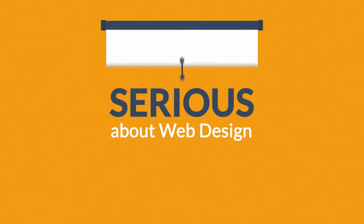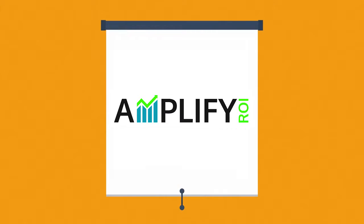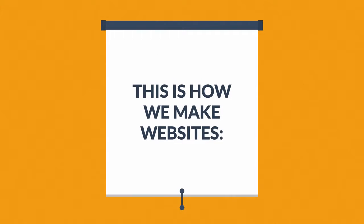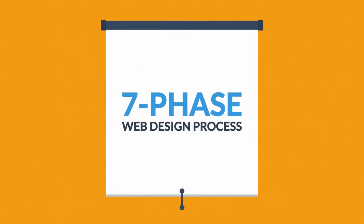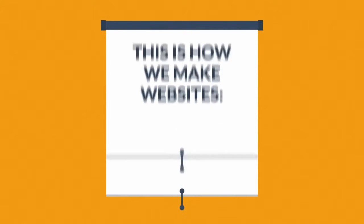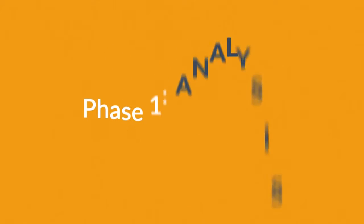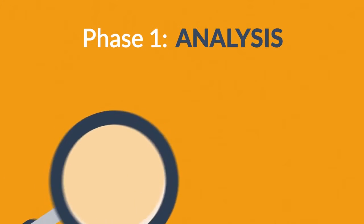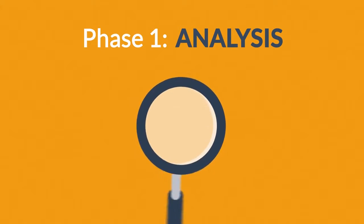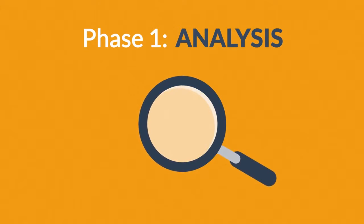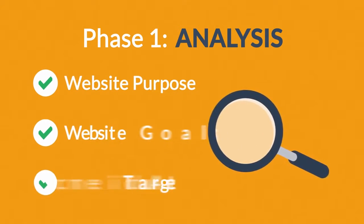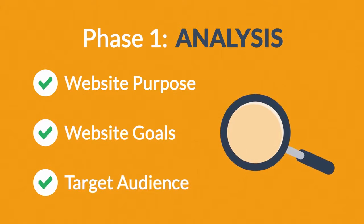That's where we come in. This is how we make websites, by following this seven-phase web design process. Phase one: Analysis. The first step is always about information gathering — identifying things like the website purpose, goals, and target audience.